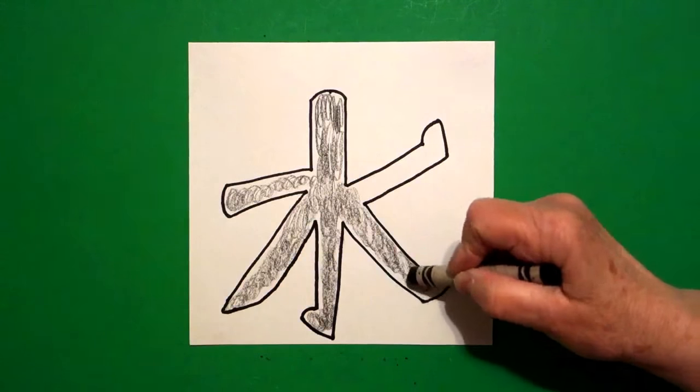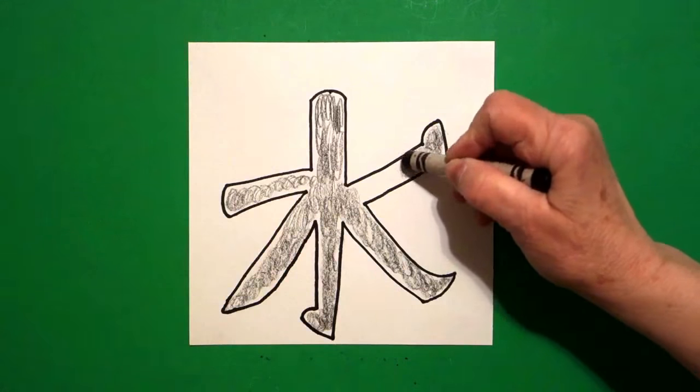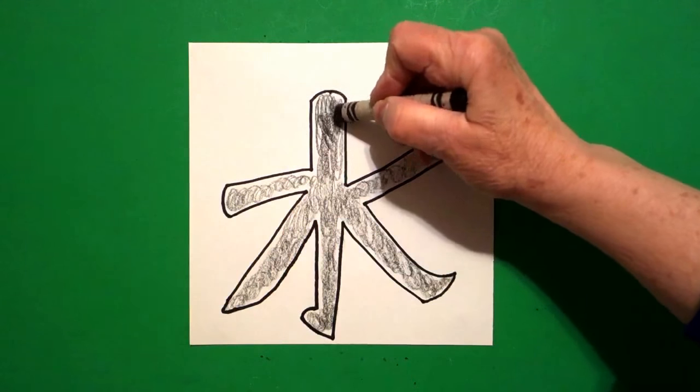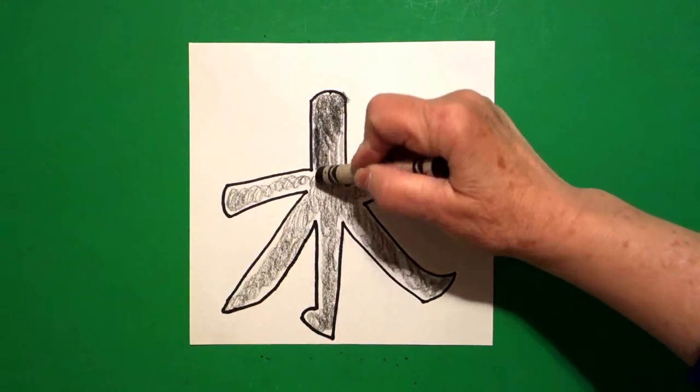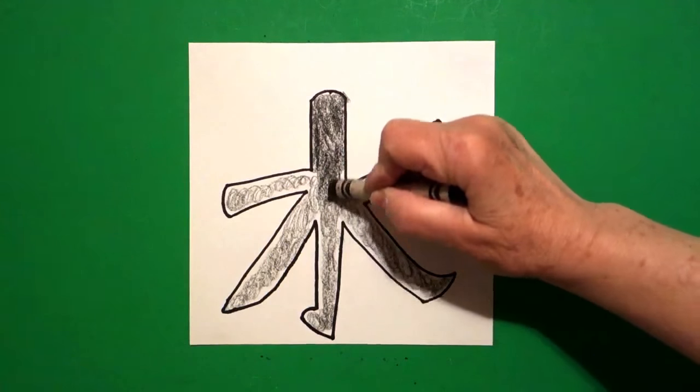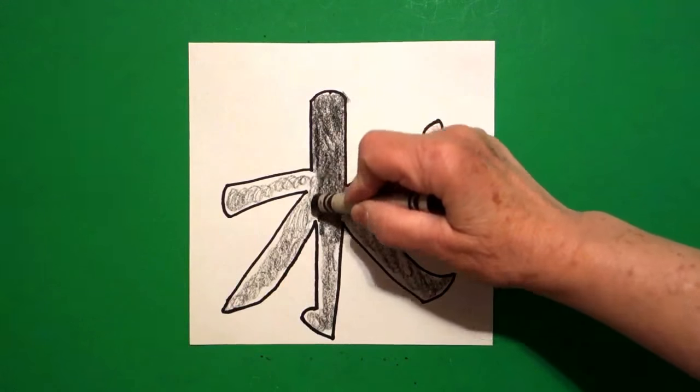Then, once you finish that first, then come back over and do a darker color black. And it might take you a couple of times, but you'll get that real nice black tone.